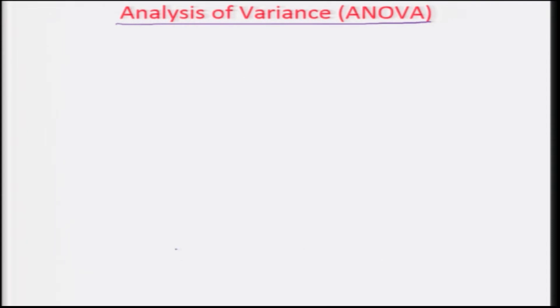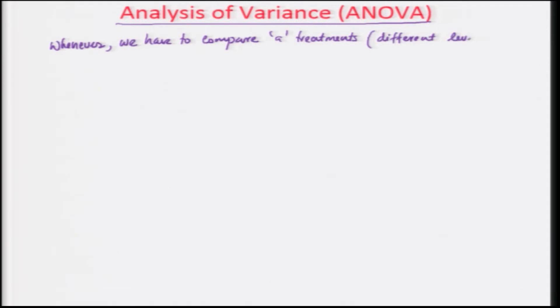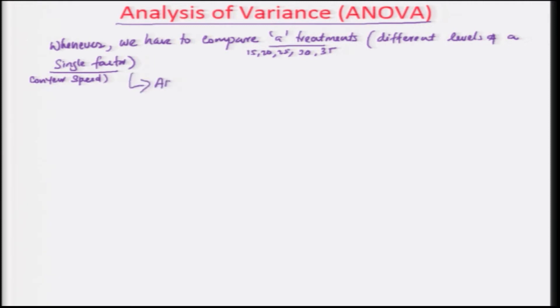We get into what we call as the analysis of variance, and we are going to talk about how we do the mechanics of the whole thing. Whenever we have to compare A treatments — which are different levels of a single factor — the single factor here is the conveyor speed. The levels or treatments are 15, 20, 25, 30, and 35 centimeters per second, which is the speed of the conveyor. ANOVA is used here.